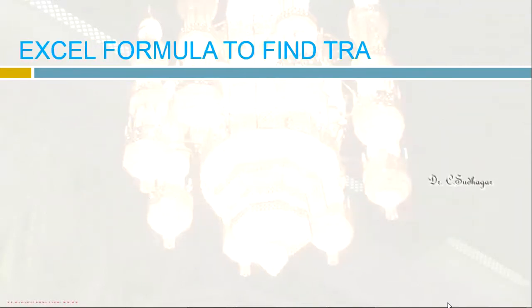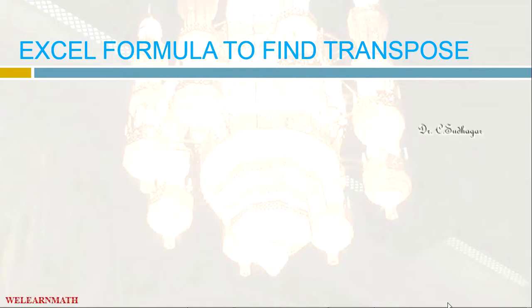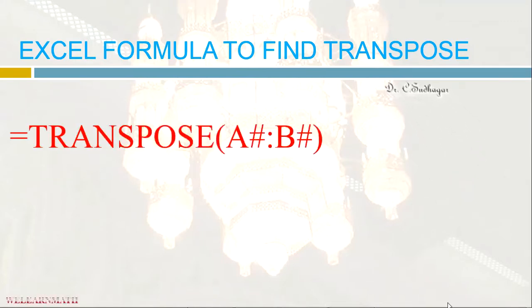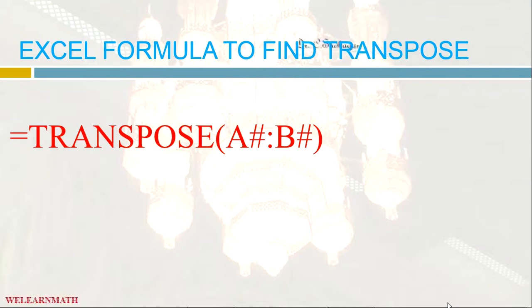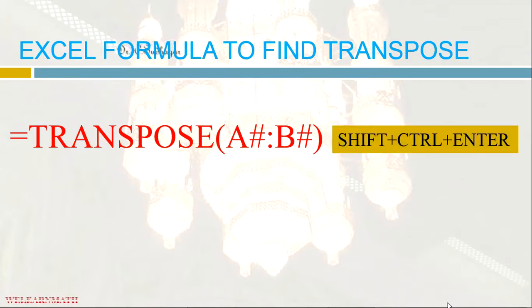Now let us see what is the formula to find the transpose of a matrix. We are going to see one method, though there are some alternate methods available. The formula is: equal to TRANSPOSE, within the bracket give the address of the matrix which we want to transpose, and use Shift+Ctrl+Enter to get the output.